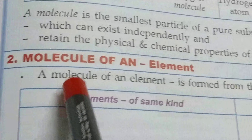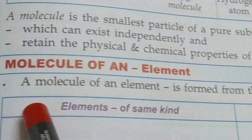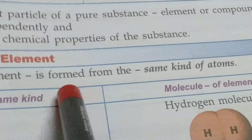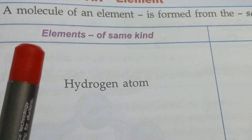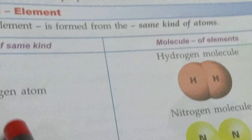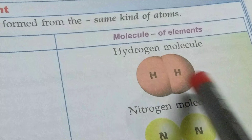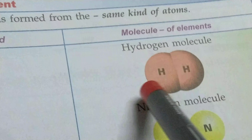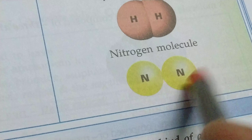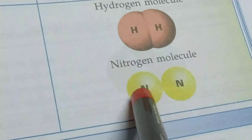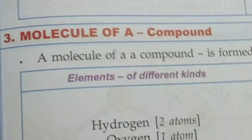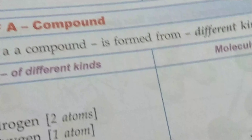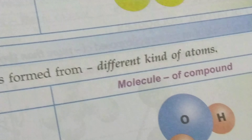A molecule of an element is formed from the same kind of atoms. Like hydrogen atoms — two hydrogen atoms combine together to form a hydrogen molecule. Same way, two nitrogen atoms combine together to form a nitrogen molecule. A molecule of a compound is formed from different kinds of atoms.